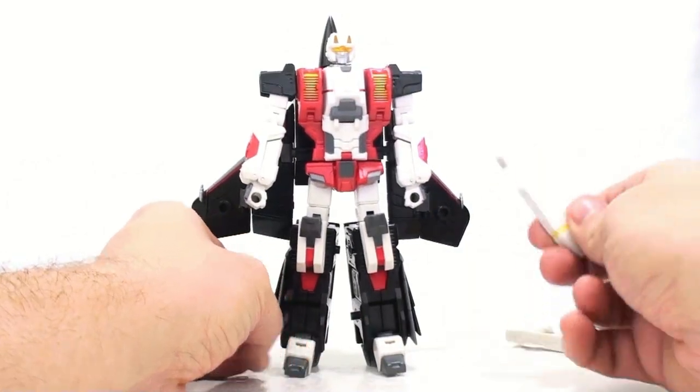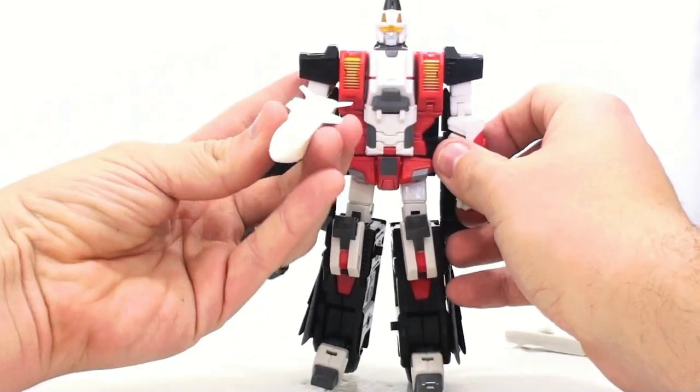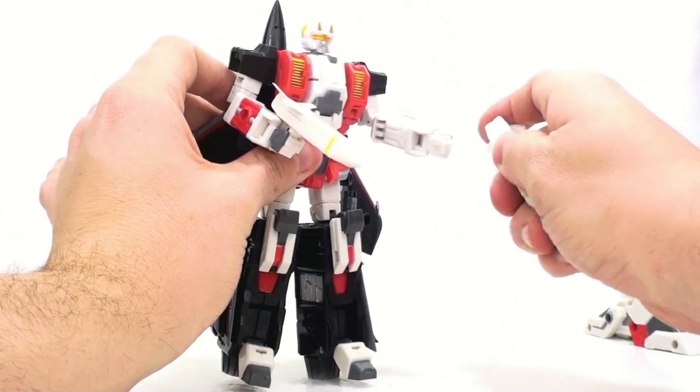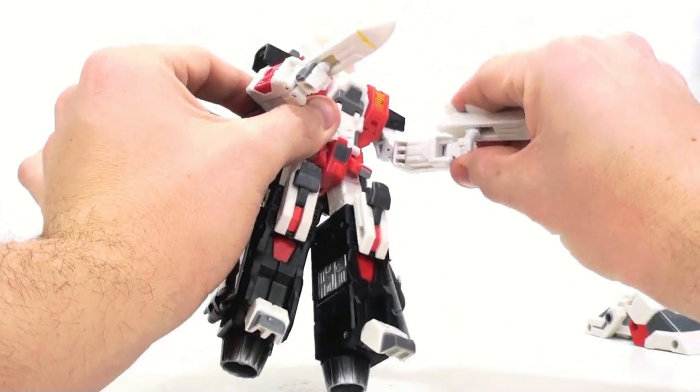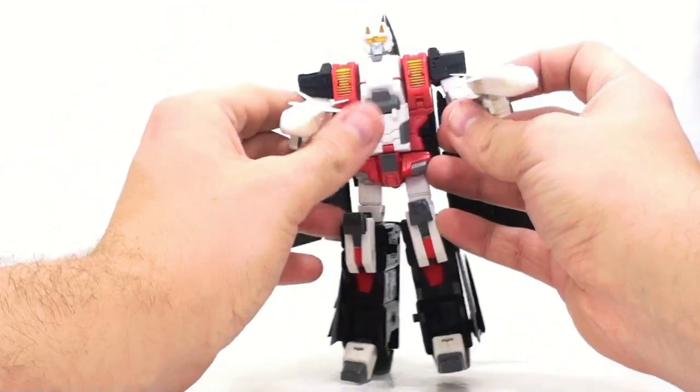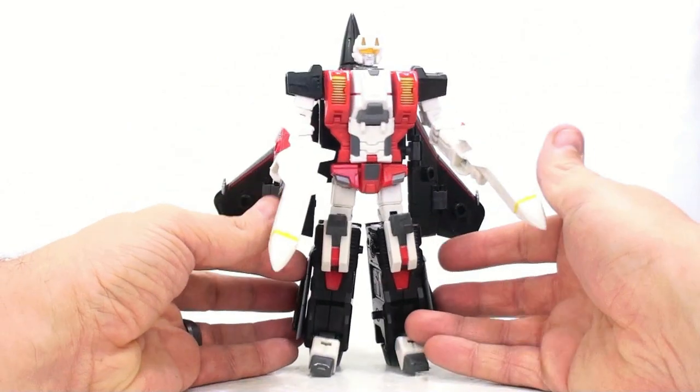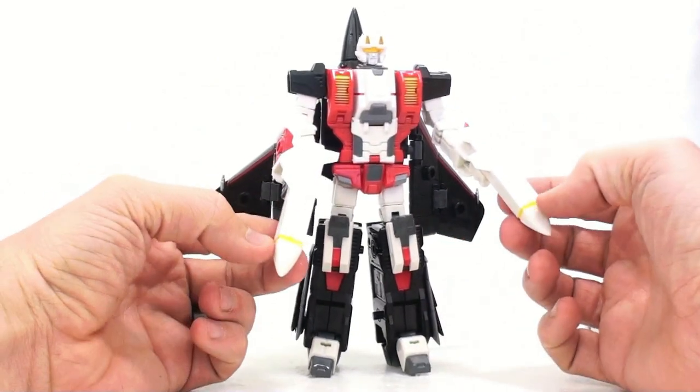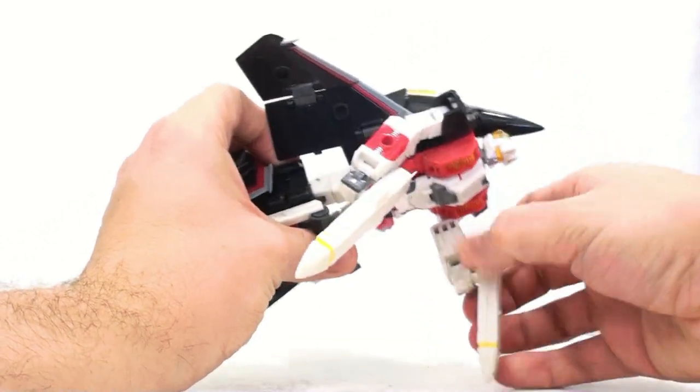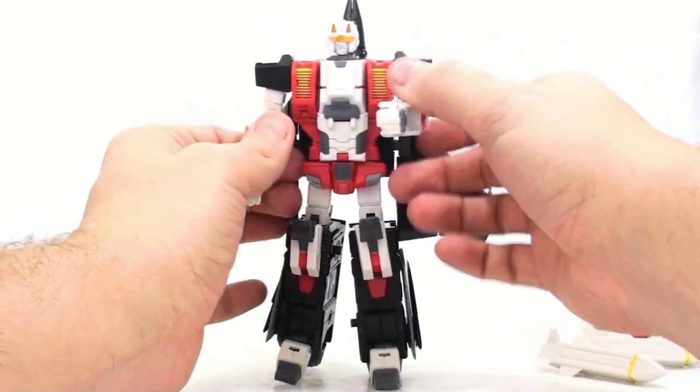For his accessories, he has these that you can have him hold as guns, I suppose. I know people have complained about the missiles being used as guns. It doesn't bug me all that much. But they're like, oh, he should come with a gun at least, I guess. But I mean, I think that this works okay, and I don't mind it all that much. I do like the little yellow bits right on here. And I know white figure, white weapons, white background, hard to see. I get it. So I do apologize for that.